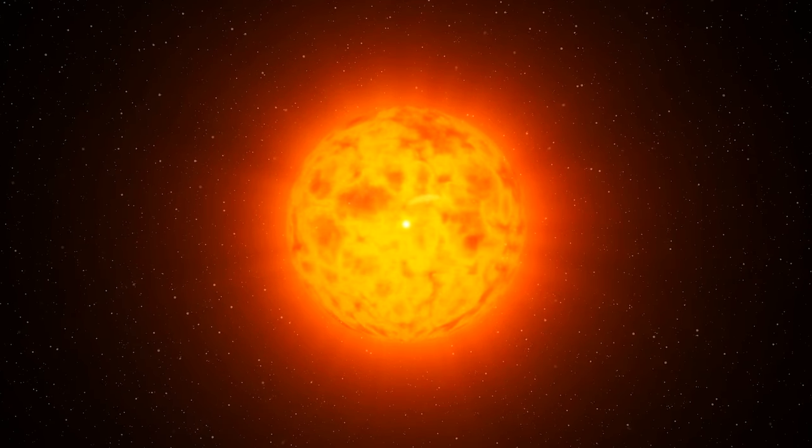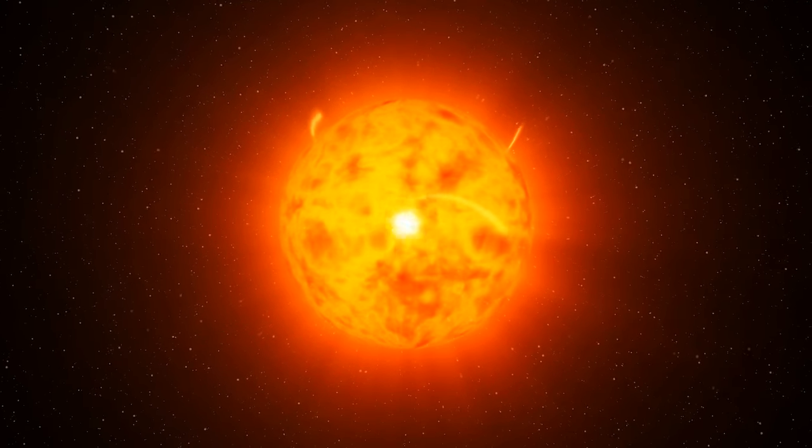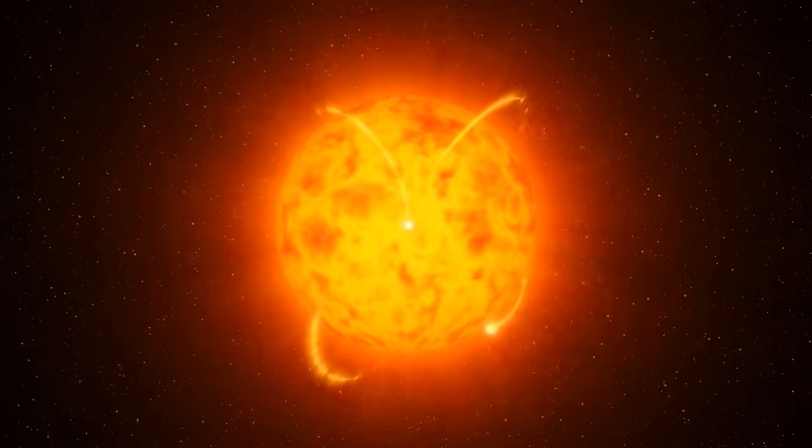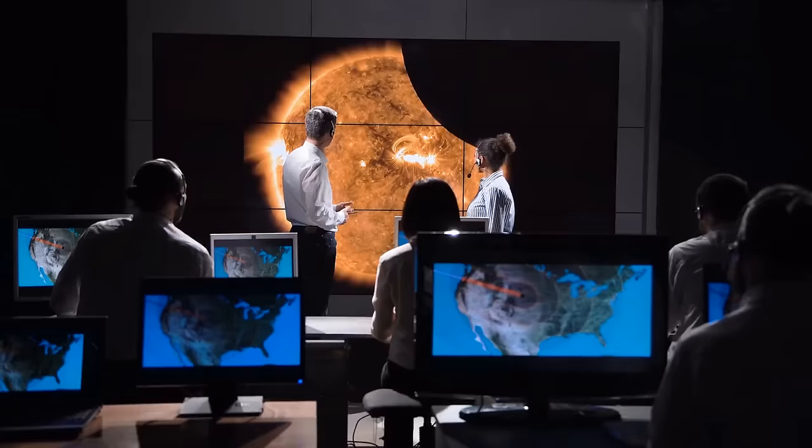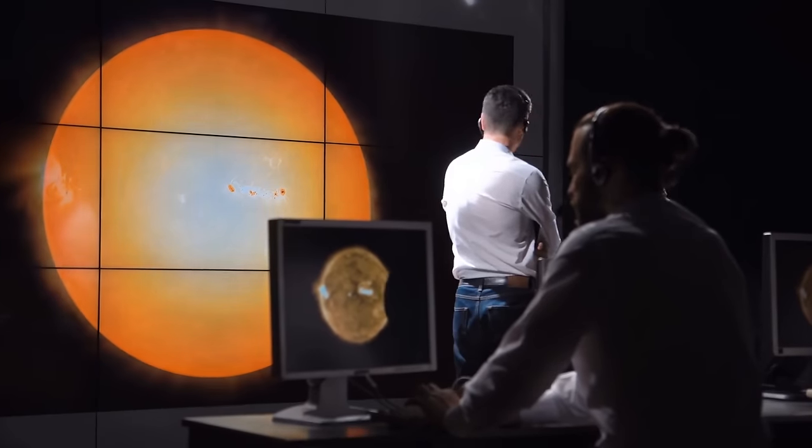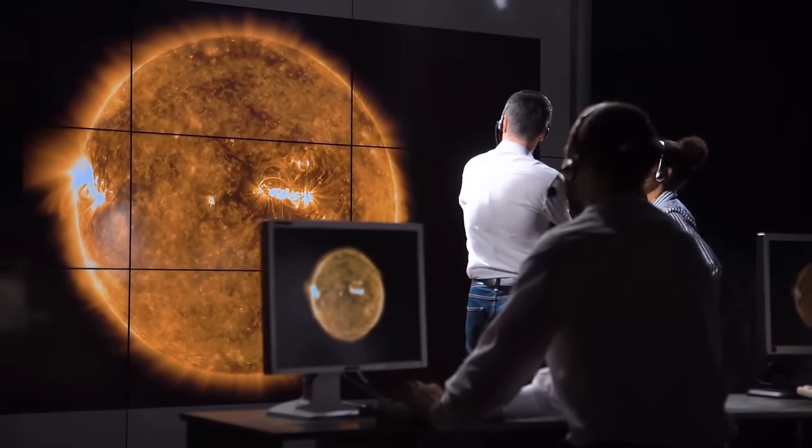This means that rho Cassiopeiae is much closer to going supernova, or in this particular case, hypernova, than astronomers used to assume. Iron is just a few steps above titanium in the periodic table. And when iron forms, fusion stops and a star collapses.